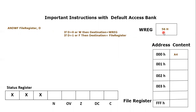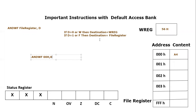Let's consider an example. Working register equals 56 hex, and the file register at address 00 hex equals A4 hex. We write the instruction as ANDWF with file register 00 hex and destination d equals 1. We know that if d equals zero or W, the destination is the working register, and if d equals one or F, the destination is the file register. Since d is 1, let's test for the file register.